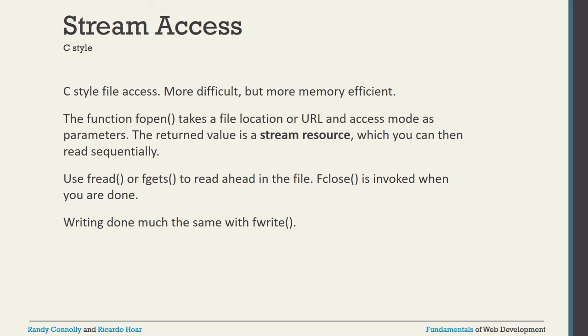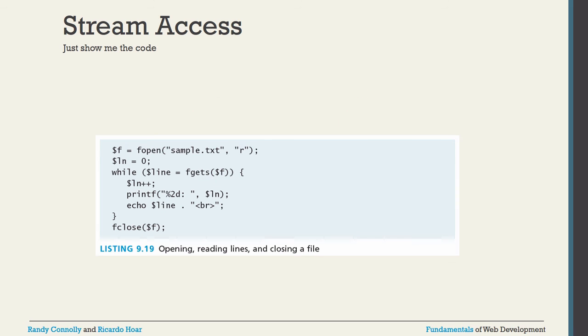For stream access (C-style file access), the key functions are: fopen() — takes a file location or URL and access mode, returns a stream resource; fread() or fgets() — both read ahead in the file; fclose() — closes the file when done; and fwrite() — for writing. File handling modes are: r (read only), r+ (read and write), w (write), w+ (read and write), and a (append to existing file). Example: open with fopen('sample.txt', 'r'), read lines in a while loop, print content, then close with fclose().